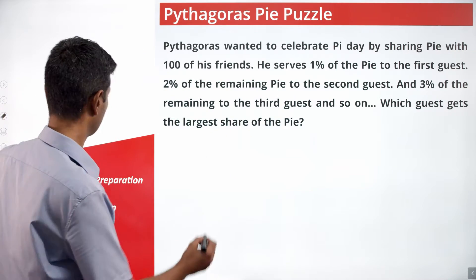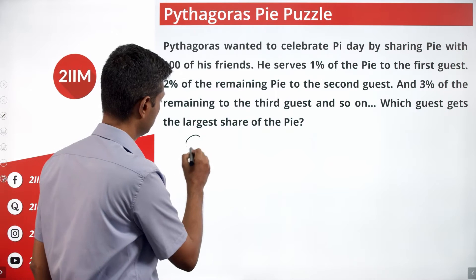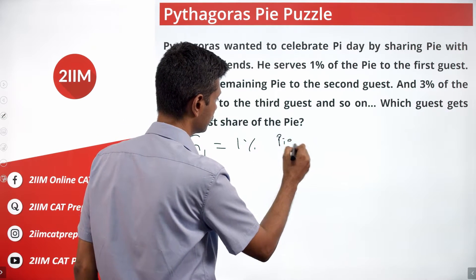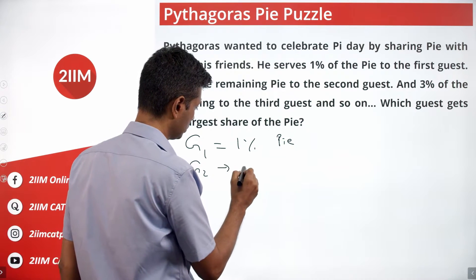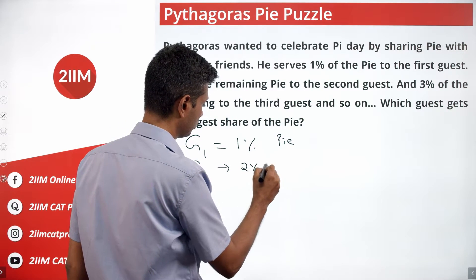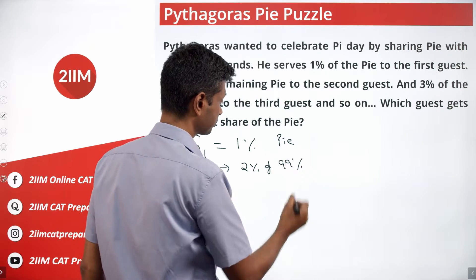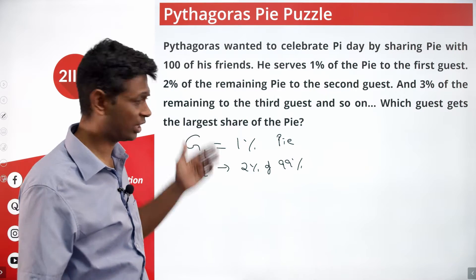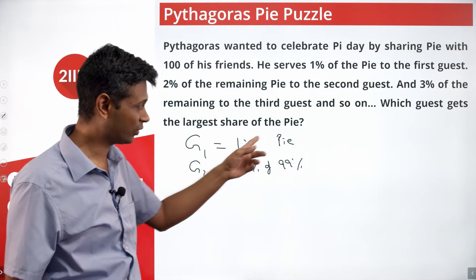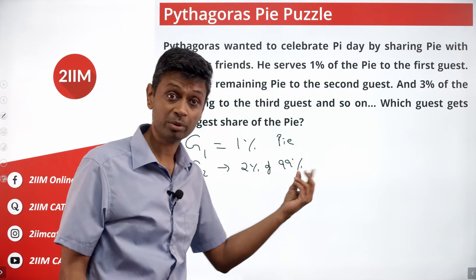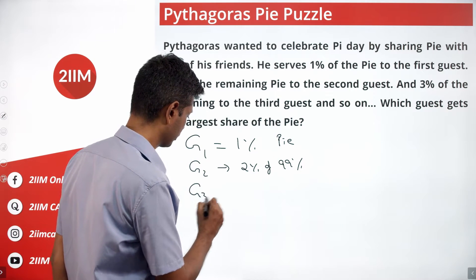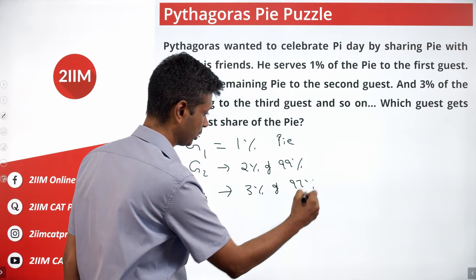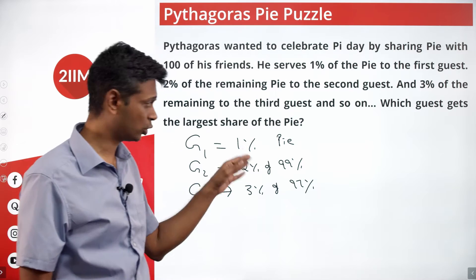Guest one gets 1% of the Pi. Guest two gets 2% of 99%. Straight away you can sense that guest two gets more than guest one - that much is clear. 1% of the entire Pi versus 2% of 99% of the Pi. Guest three will get 3% of... wait, why 1% gone here, 2% gone here?